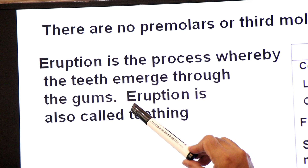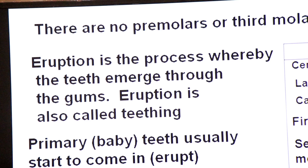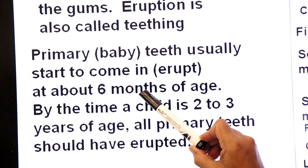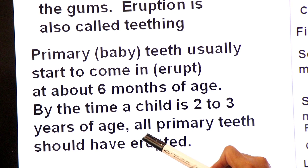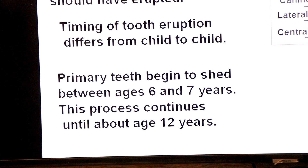Eruption is the process whereby teeth emerge through the gums. Primary baby teeth usually start to erupt at about six months of age, and by the time a child is two to three years old, all 20 primary teeth should have erupted. Remember that the time of tooth eruption differs from child to child.